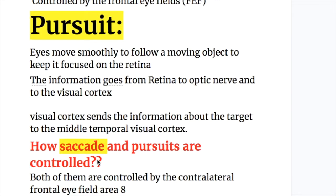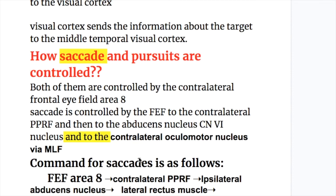The information goes from the retina to the optic nerve and to the visual cortex. The visual cortex then sends information about the target to the middle temporal visual cortex.